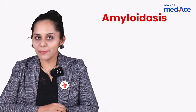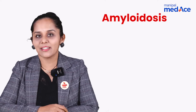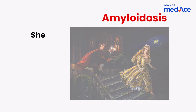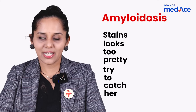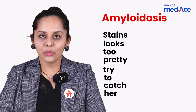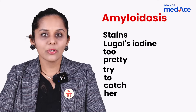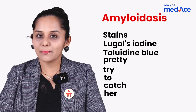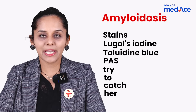There is a simple mnemonic to remember all the special stains used in amyloid detection: 'She Looks Too Pretty, Try To Catch Her.' S for stains, L for Lugol's iodine, T for Toluidine blue, P for PAS, where you have pale staining of the amyloid deposits.